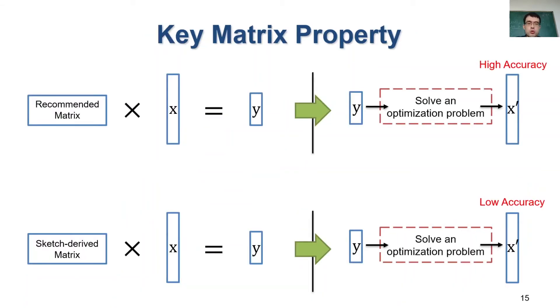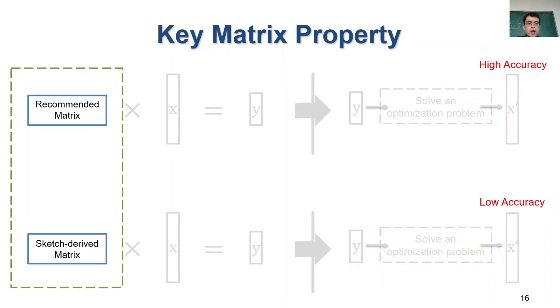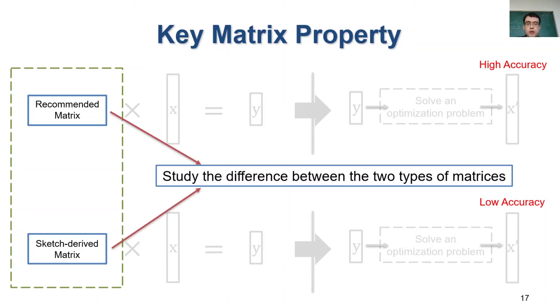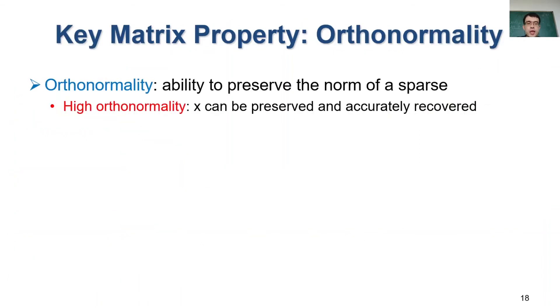If we compare the two methods, we can find that the only difference between the two methods is the sensing matrix we use. So this motivates us to study the properties of the sensing matrix. We find that in classical compressive sensing, each recommended sensing matrix has an important property called orthonormality.